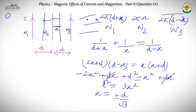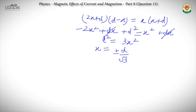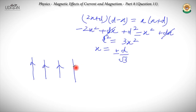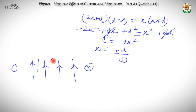Now suppose we have a similar question with four wires. Here, checking outside the boundaries — on one side the magnetic field will be into the plane, on the other side it will be out of the plane. So we have to find the locus for three regions between the wires. In this case we get a cubic equation, and we can solve it to get all three values.